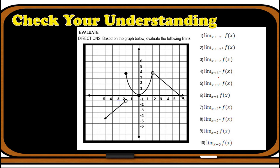I hope you have understood our discussion. Now check your understanding: given this graph of a piecewise function, evaluate the following limits. You may pause the video to answer. Let's check your work: item 1 — the limit is -1; item 2 — positive 4; item 3 — the limit does not exist; item 4 — the limit is 3; item 5 — the limit is 3; item 6 — the limit is 3; item 7 — the limit is 4; item 8 — the limit is 4; item 9 — the limit is 4; item 10 — the limit is 0.